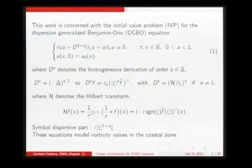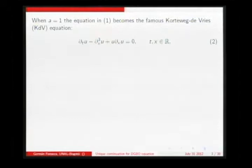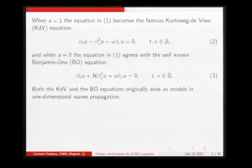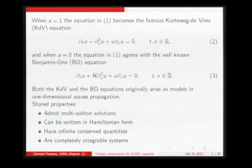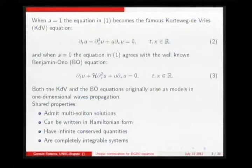In the case A equals 1, we get the KdV equation, and in the case A equals 0, we get the Benjamin-Ono equation. Both are well-known models for propagation of unidirectional waves, and they have properties in common: they have multi-soliton solutions, can be written in Hamiltonian form, have infinite conserved quantities, and are completely integrable systems.